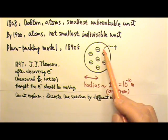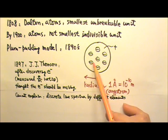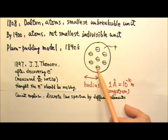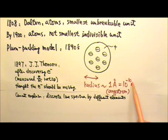To make the atom neutral, negatively charged electrons would be embedded in the sphere like plums in the pudding. By the way, the size of an atom is about 10 to the negative 10th meter.